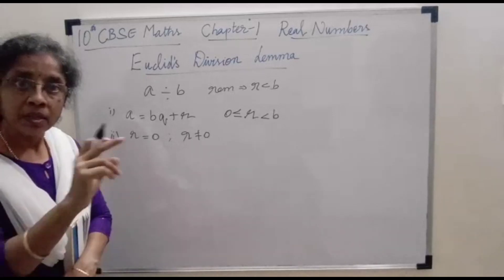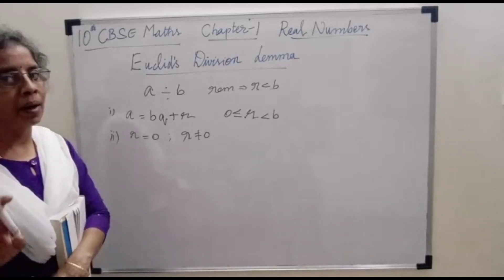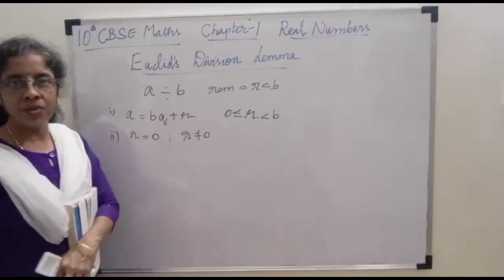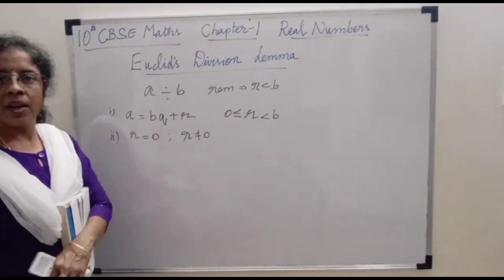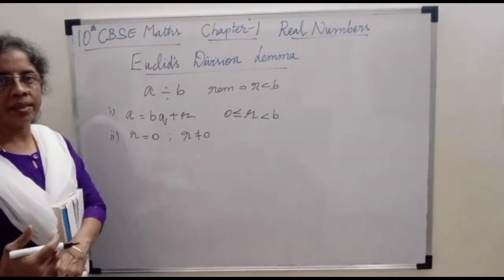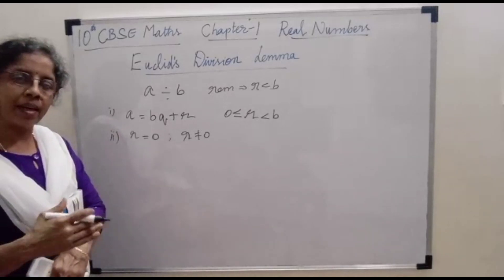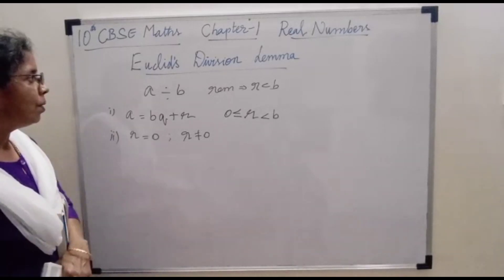The process continues till you get the remainder 0. This is Euclid's division lemma. First we will see one or two examples to make it easy to understand.